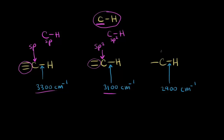And finally, if we have only single bonds to the carbon, we're talking about an sp-3 hybridized carbon. The signal for that carbon-hydrogen bond stretch shows up at about 2,900 wave numbers. So how do we explain these different wave numbers, since they're all carbon-hydrogen bonds?